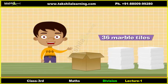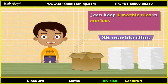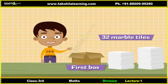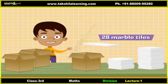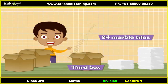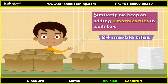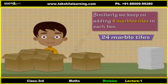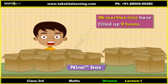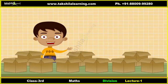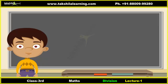I have thirty-six marble tiles. I can keep four marble tiles in one box — how many boxes do I need? Four marbles in the first box, leaving thirty-two. Four in the second box, leaving twenty-eight. Four more in the third box, leaving twenty-four. We keep adding four marble tiles to each box until the last four marble tiles fill the ninth box. Thirty-six marble tiles put into equal groups of four need nine boxes.